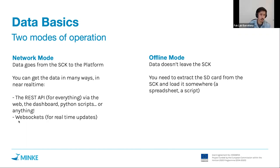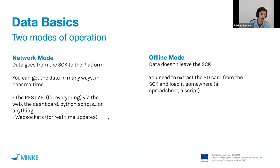We also offer an interface called WebSockets in case you want real-time updates. As soon as the kit sends data it can forward you a notification that new data has arrived. This is used when you want to build web visualizations or applications that really need real-time data. WebSockets is the fastest way — the API is normally a little bit slower, whereas WebSockets delivers data as soon as it reaches our platform.